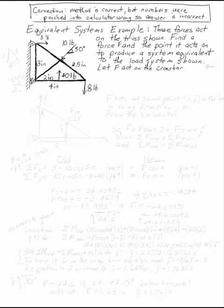Three forces act on the truss shown. Find a force F and the point at X bar, Y bar, somewhere on the crossbar of our triangular truss, so that I can have the same pin at A and the same pin at B.